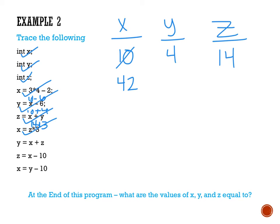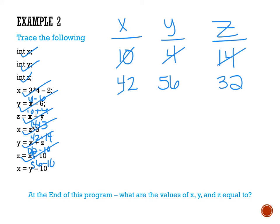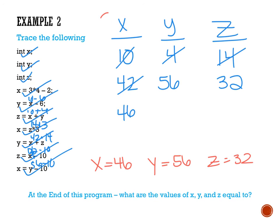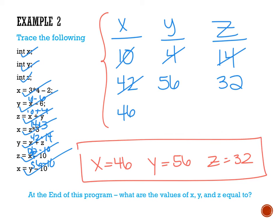Then y is reassigned x plus z. x is currently 42 and z is 14, so y is reassigned the value 56. Then z is assigned x minus 10, and x is currently 42, so 42 minus 10 leaves z at 32. Then x is reassigned y minus 10. y is currently 56 minus 10, which leaves x at 46. At the end, x equals 46, y equals 56, and z equals 32. You can see all the changes taking place as we trace, and where the variables end up at the end.